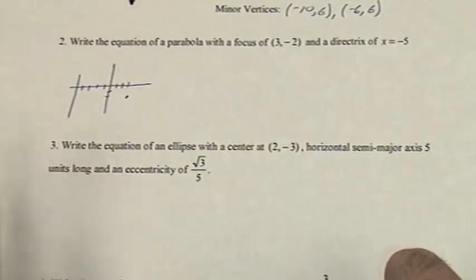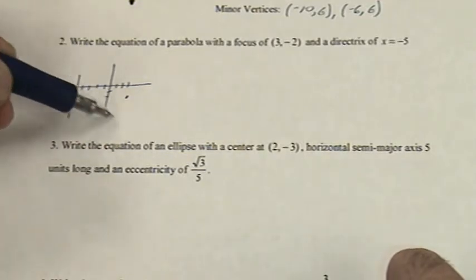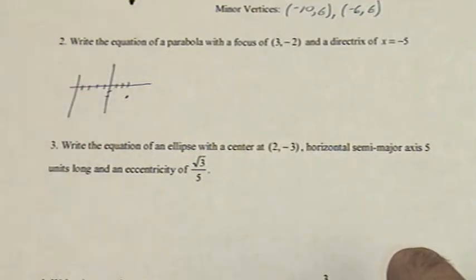Based on what we have here, this directrix and this focus, it looks like the parabola will probably open to the right. So it's horizontal, y is the variable that will be squared, and opening to the right, that means p is going to be positive.